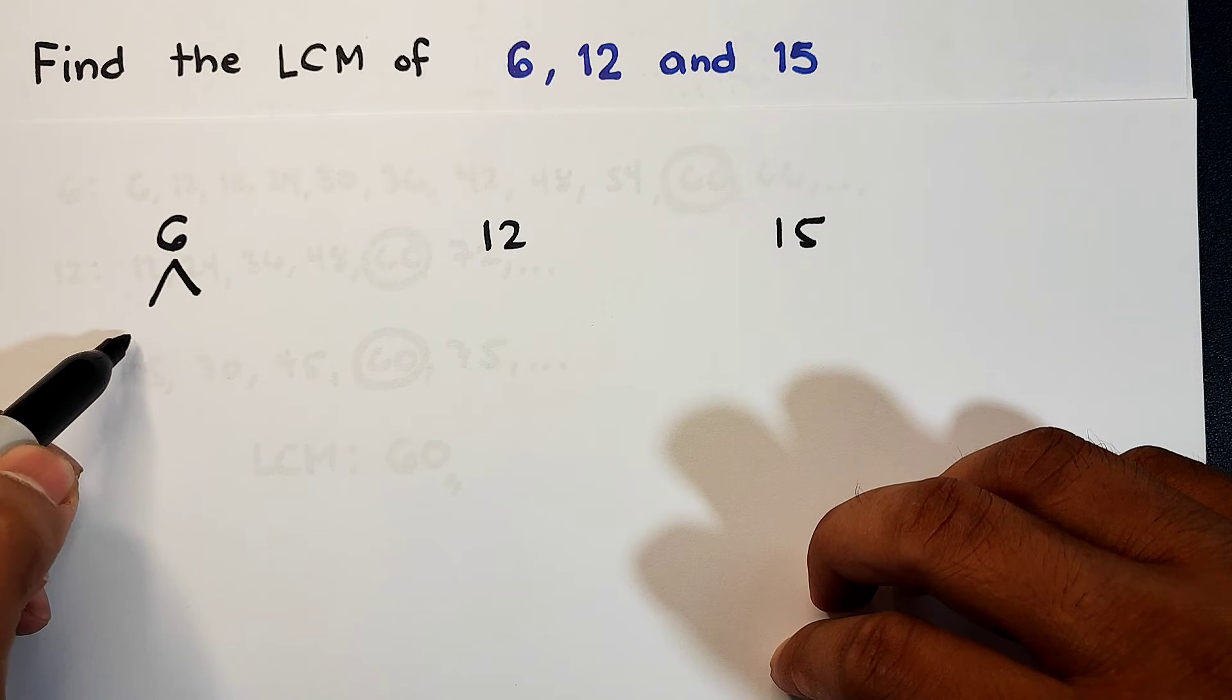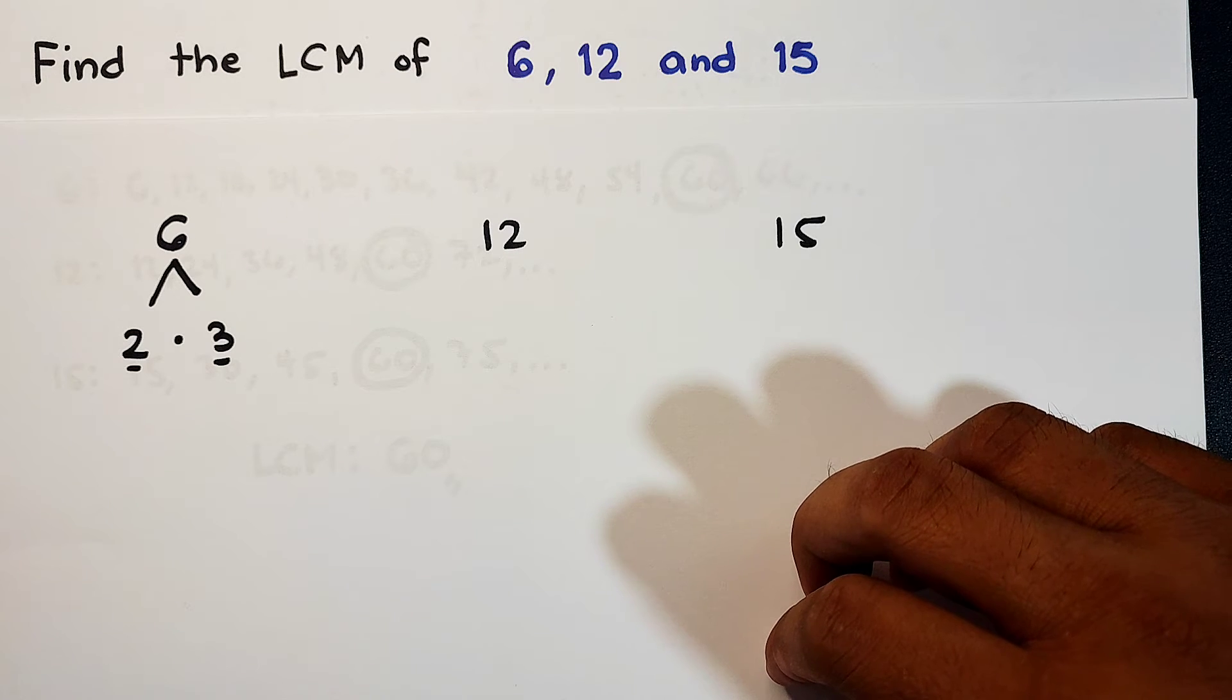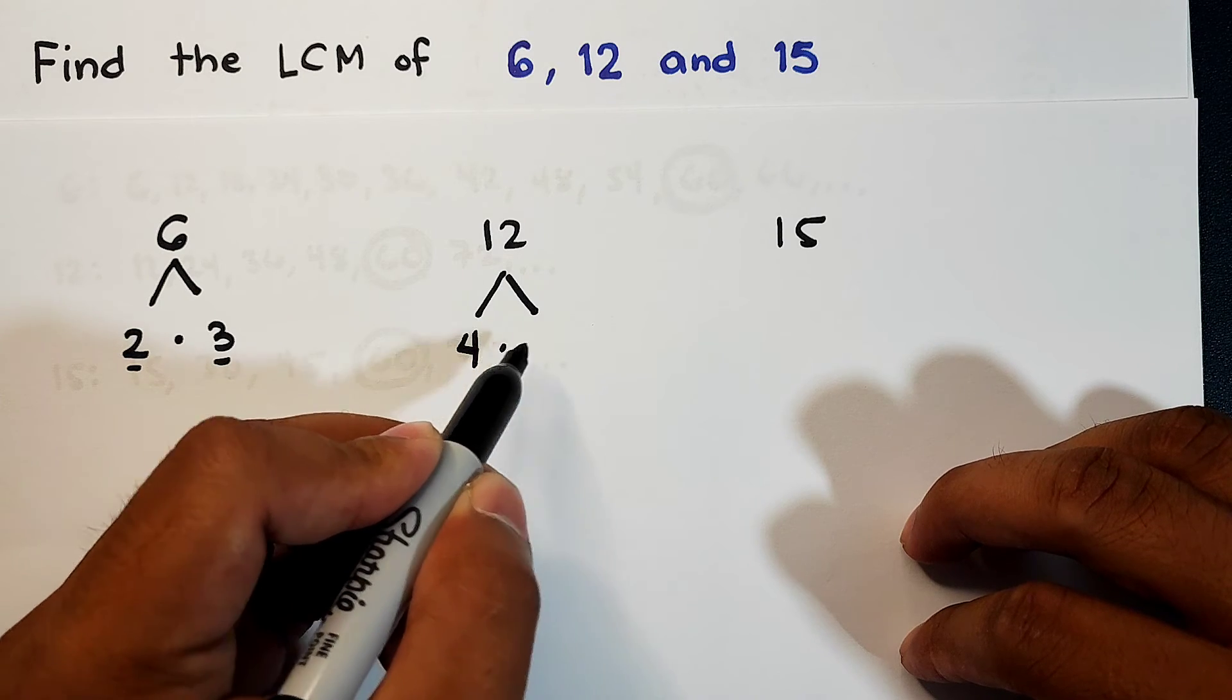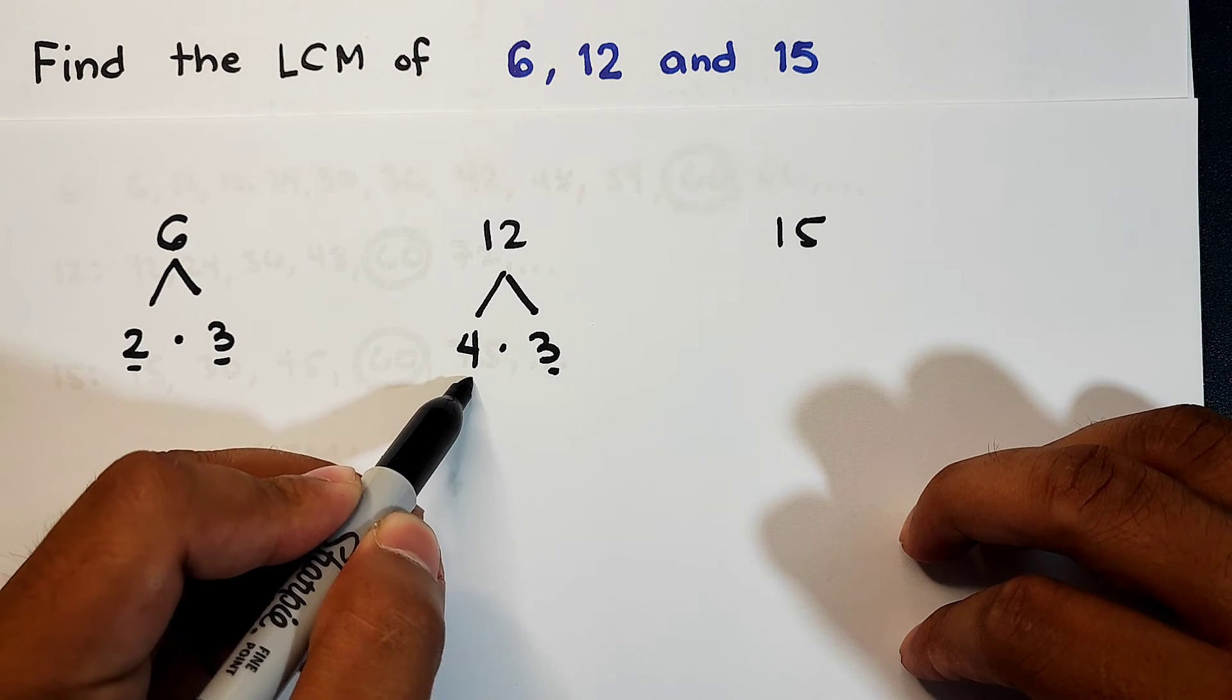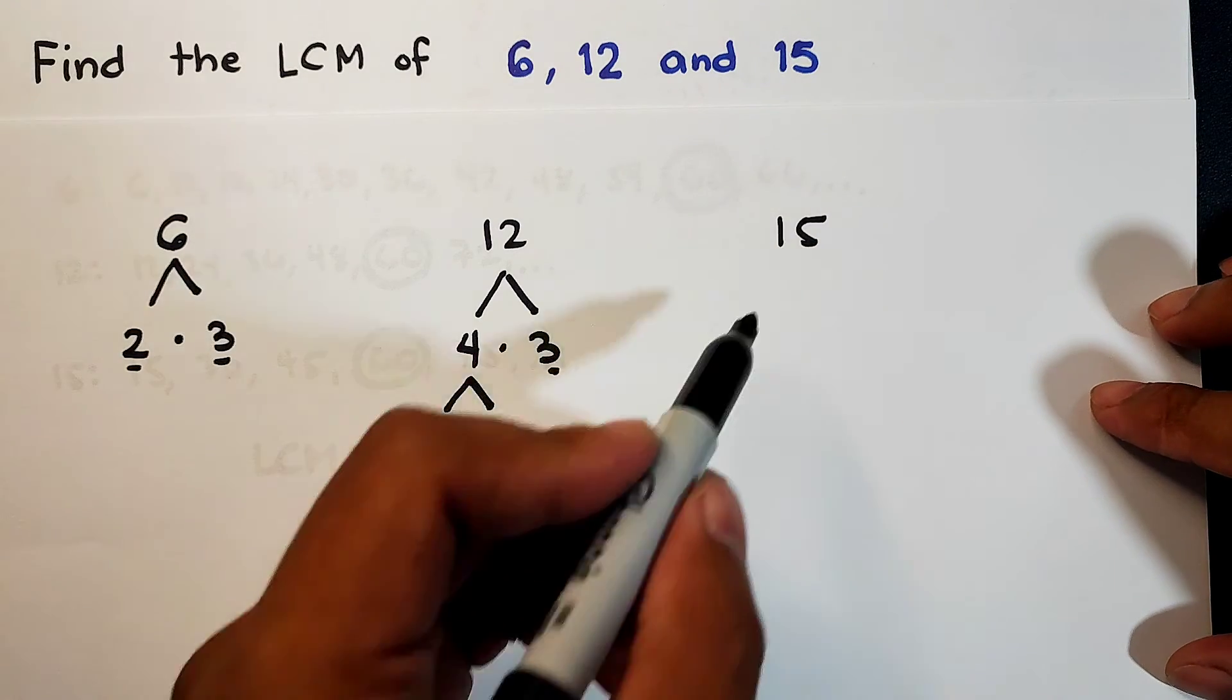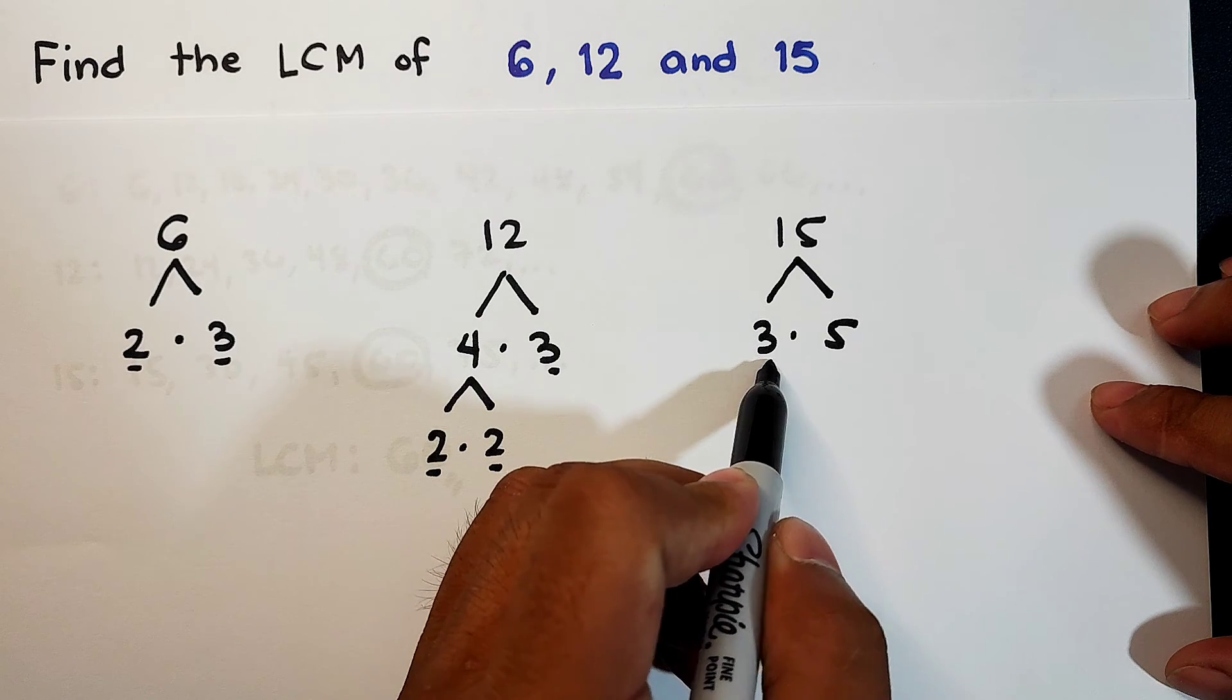6 can be factored out as 2 times 3. So we stop here because these are already prime factors. 2 and 3 are prime factors or prime numbers. For 12 naman, we could use 4 times 3. So stop natin ito because this one is already a prime number, but for 4 we can still factor it out as 2 times 2, and we will stop here because 2 are prime numbers. So what about 15? For 15, the factors are 3 times 5. Are they already prime factors? Yes, they are prime factors.